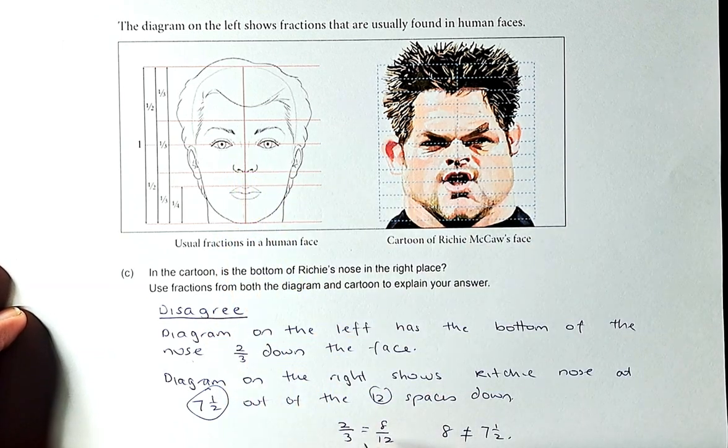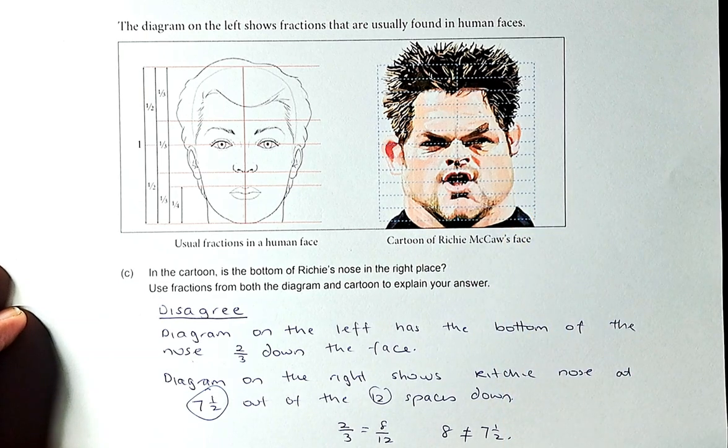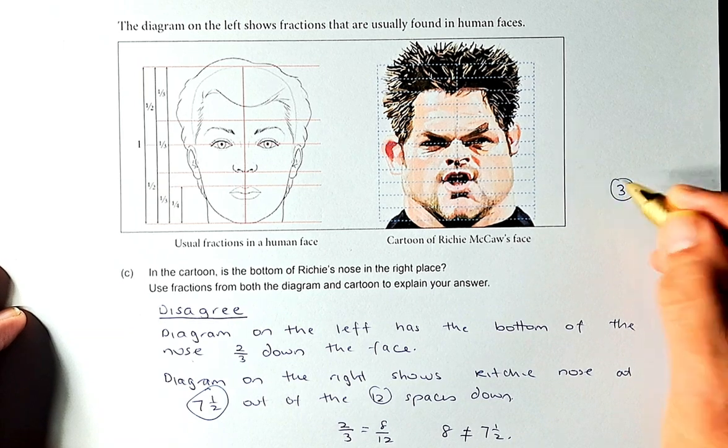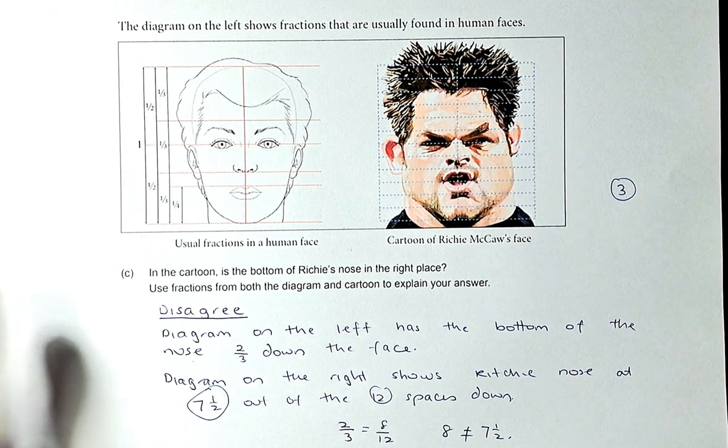But you know that on the left hand side is two-thirds. Two-thirds equivalent fraction is eight over 12. But on the right, it is seven and a half out of 12. So we can say that the nose is not at the right place. This is a good argument and that will be outcome number three. Hope you got it and I'll see you soon. Cheers everyone and have a good day.